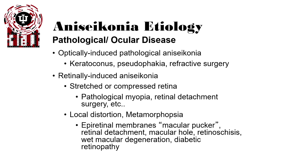Intrinsic anisoconia can also be retinally induced — anything that stretches or compresses the retina, such as pathological myopia, where the eye is stretched, or retinal detachment surgery. Local distortions or metamorphopsias can also occur. Epiretinal membranes — fibrous membranes that grow across the retina — can stretch and pull the retina, misplacing the retinal elements in one eye relative to the other, thereby inducing anisoconia.